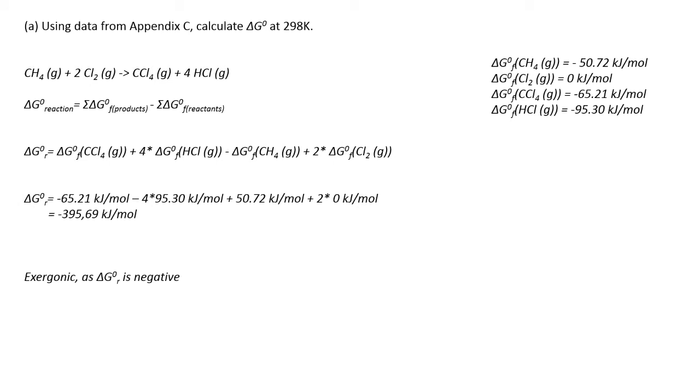Basically what you need to do is to calculate delta G° of the reaction. You need to add up the delta G° founding of the products. In this case it's carbon tetrachloride and four times the hydrogen chloride minus the delta G° of the reactants. In this case it's methane and two times the delta G° founding of chloride. But delta G° founding of chloride is zero because chloride is an atom, so it has no Gibbs free energy. And if you put in the values you get minus 395.69 kilojoule per mole.